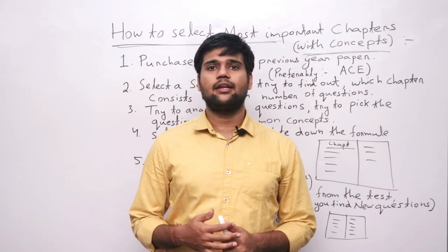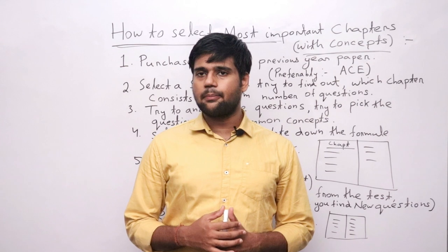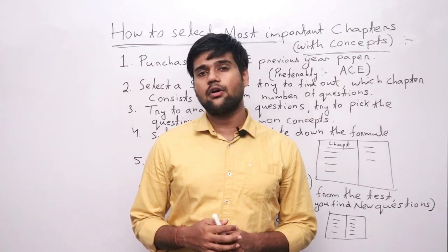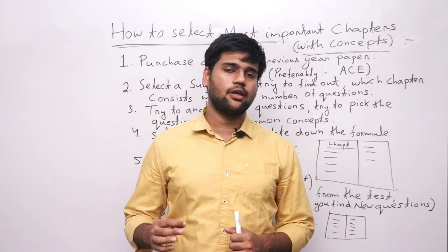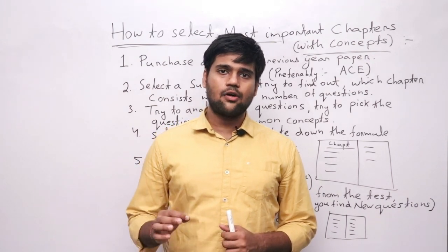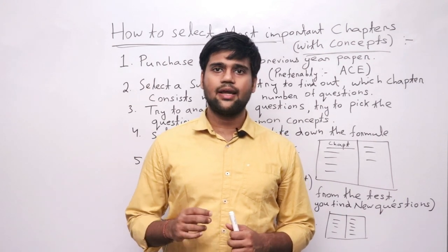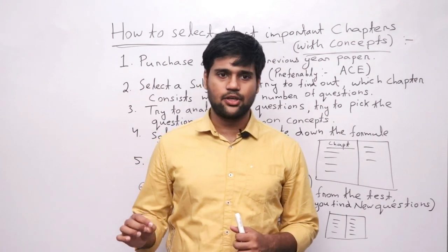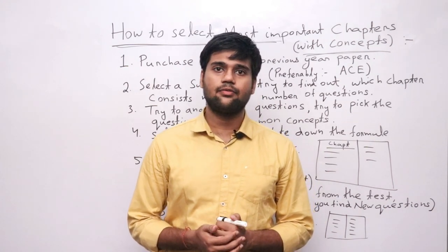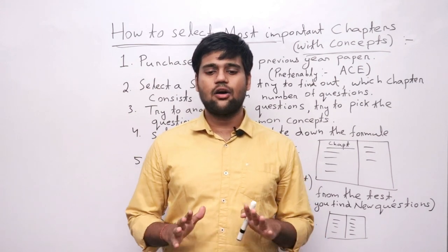For English, I have mentioned in a previous video that you have to read the newspaper daily and increase your skills day by day. For aptitude, you have to solve aptitude questions for one hour a day up to January. One and a half hours each for aptitude and English if you want to make a good score. After subtracting 10 questions, 55 questions now remain.